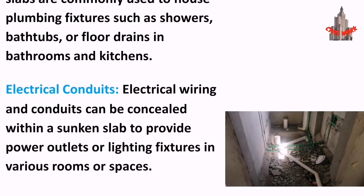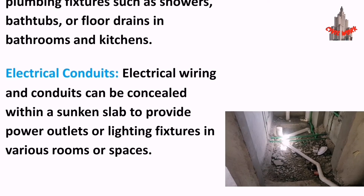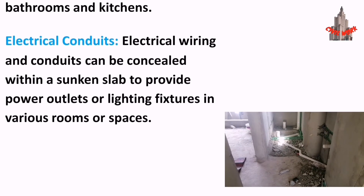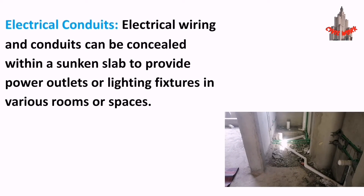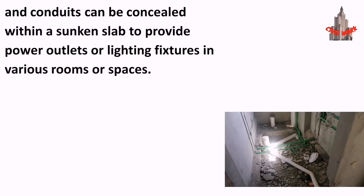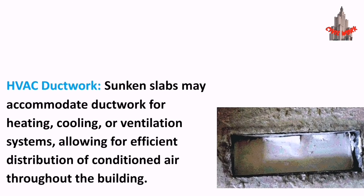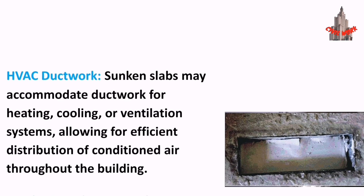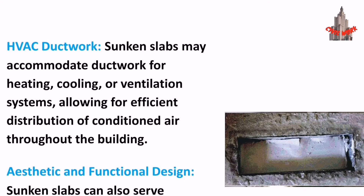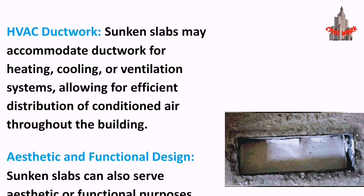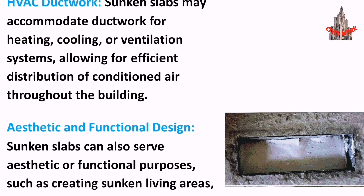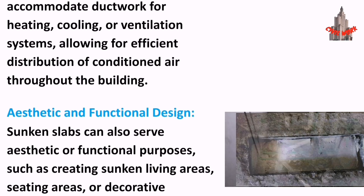Electrical conduits: Electrical wiring and conduits can be concealed within a sunken slab to provide power outlets or lighting fixtures in various rooms or spaces. HVAC ductwork: Sunken slabs may also accommodate ductwork for heating, cooling, or ventilation systems, allowing for efficient distribution of conditioned air throughout the building.